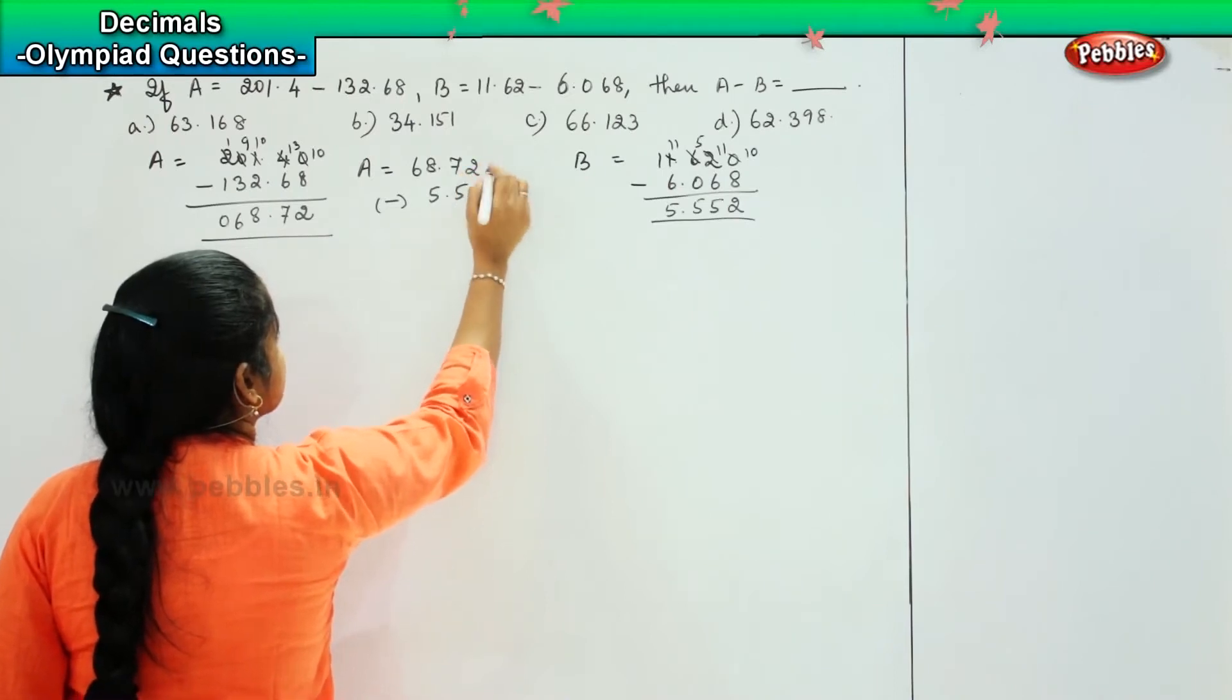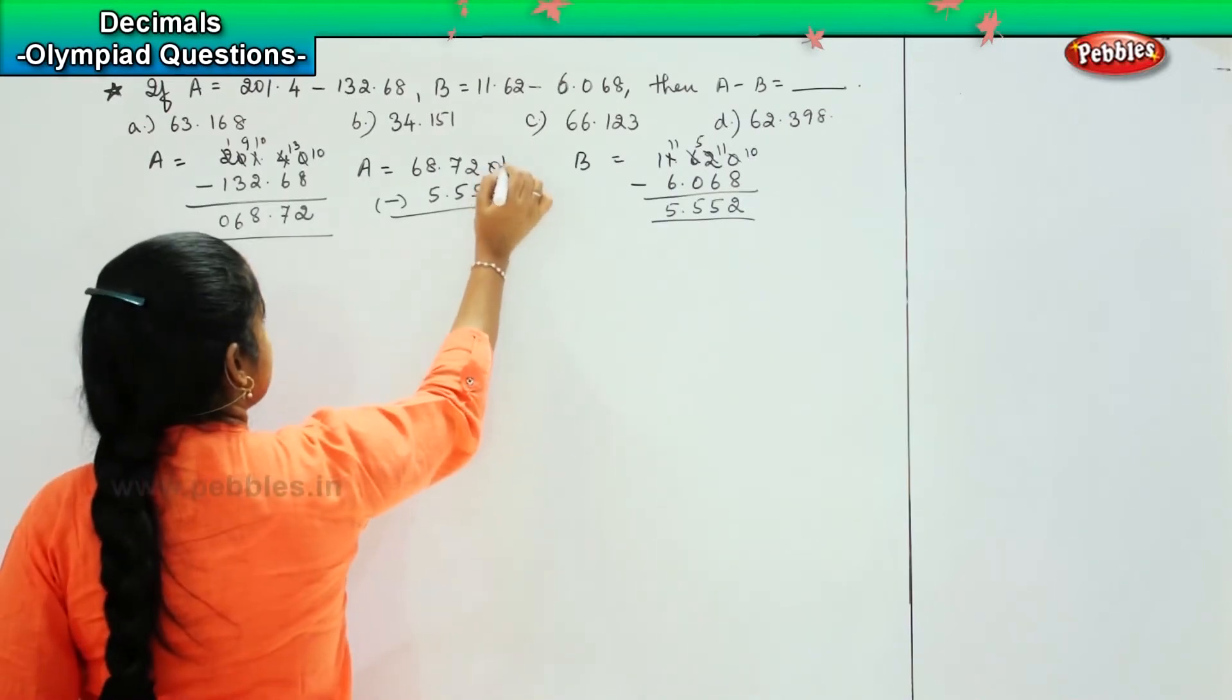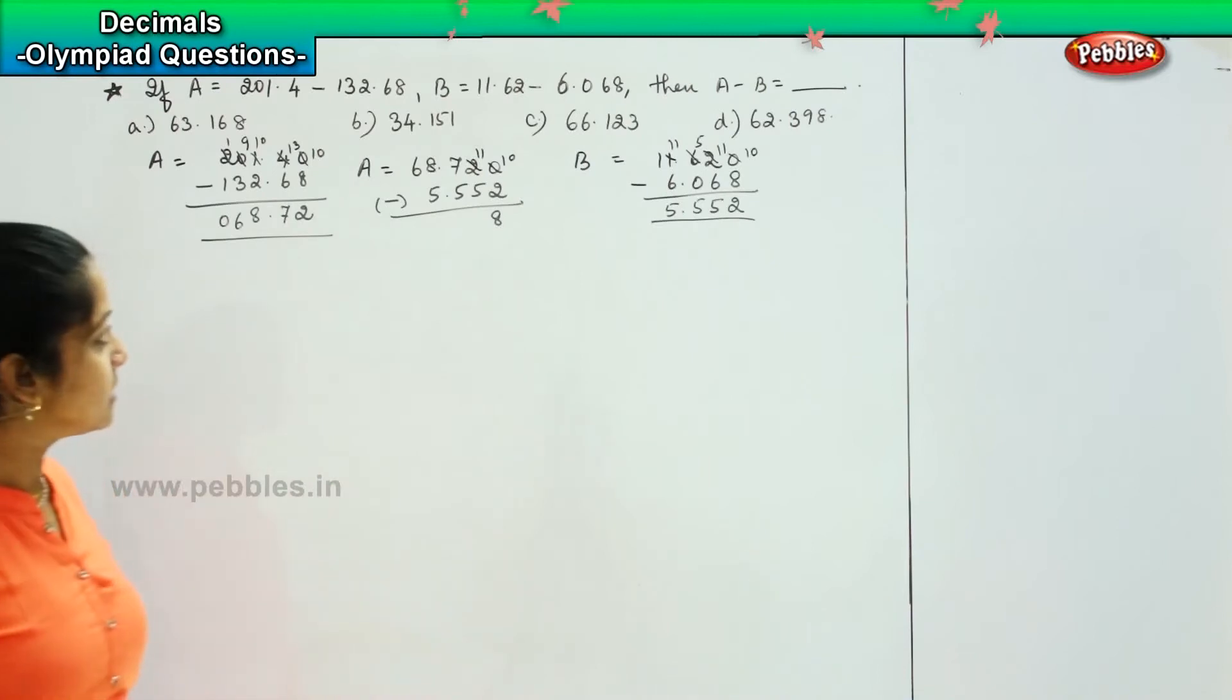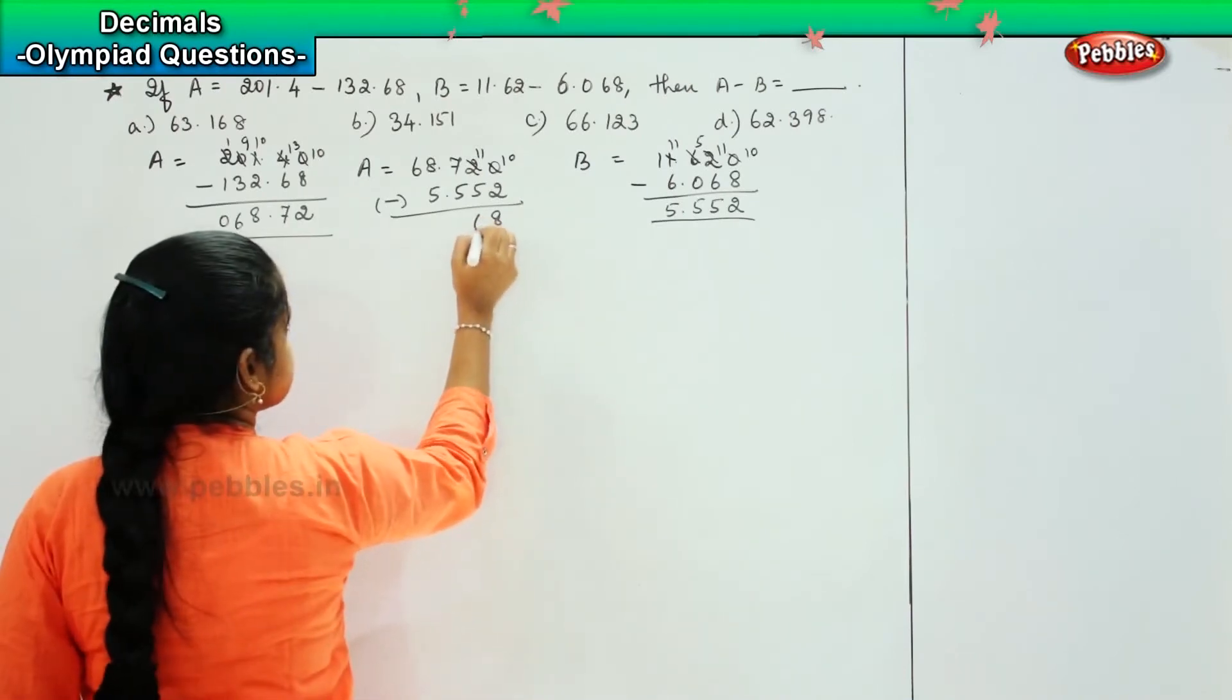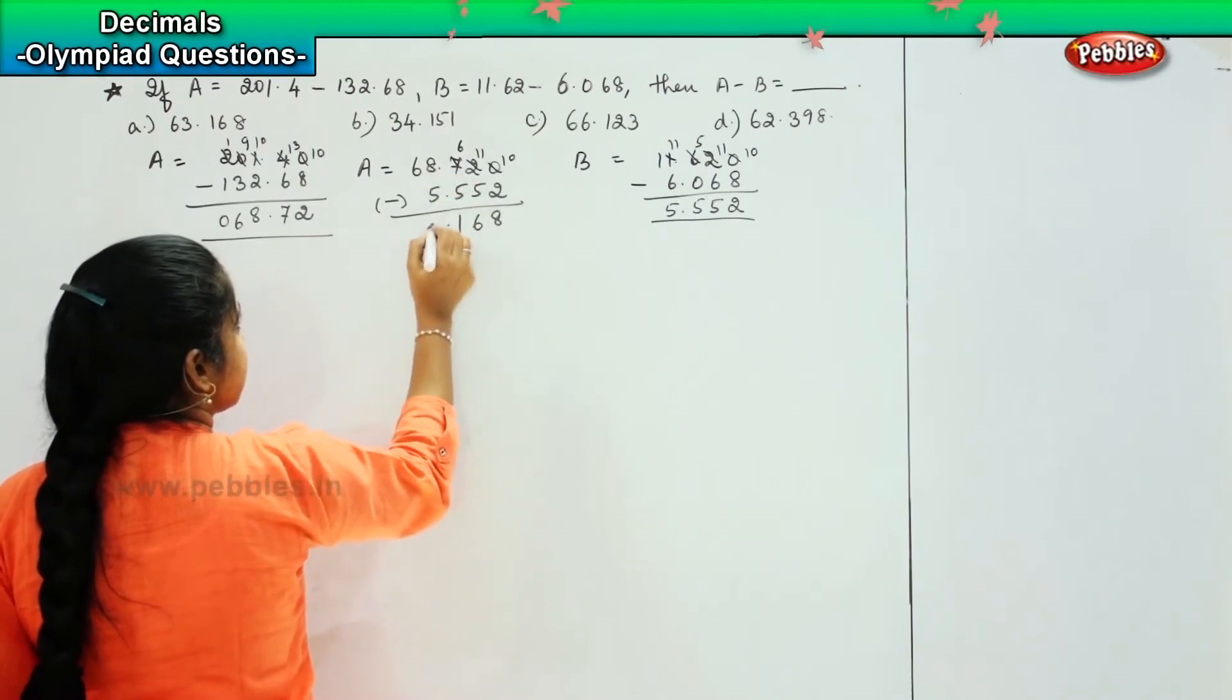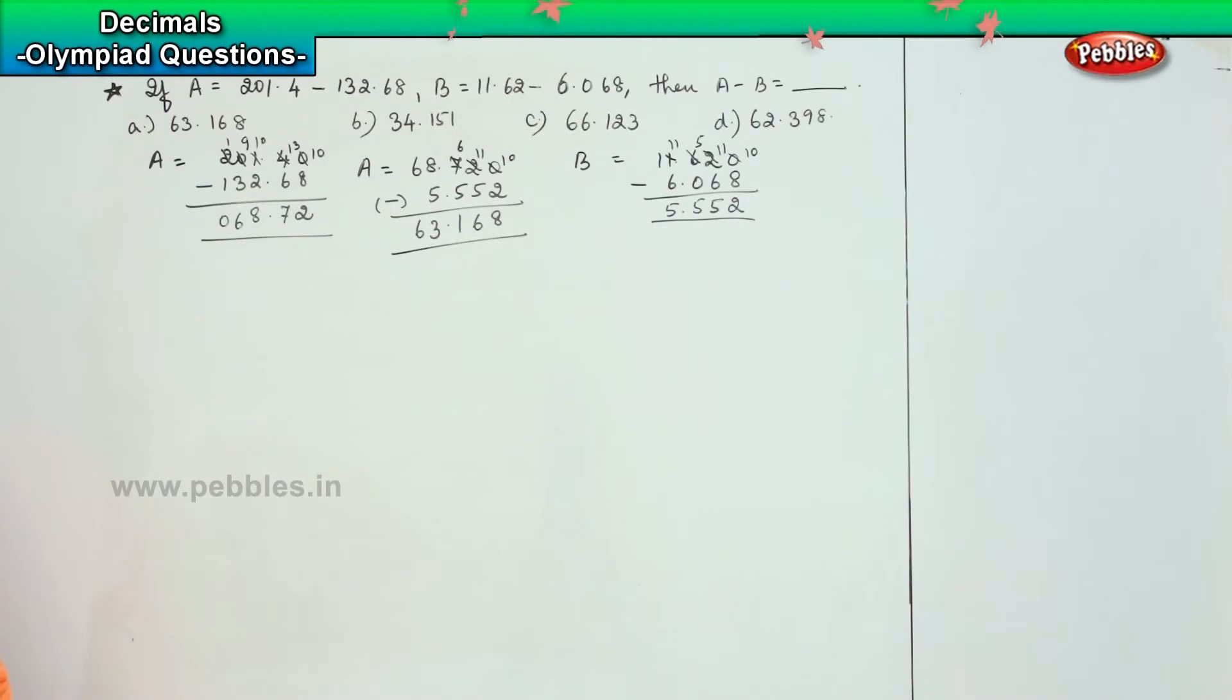So here minus 5.552. So we will figure out the answer now. So 10 minus 2 is 8, 11 minus 5 is 6, 6 minus 5 is 1, 8 minus 5 is 3 and 6. So A minus B is 63.168. Where can you find it? It is over here, option A. Clear? The next question.